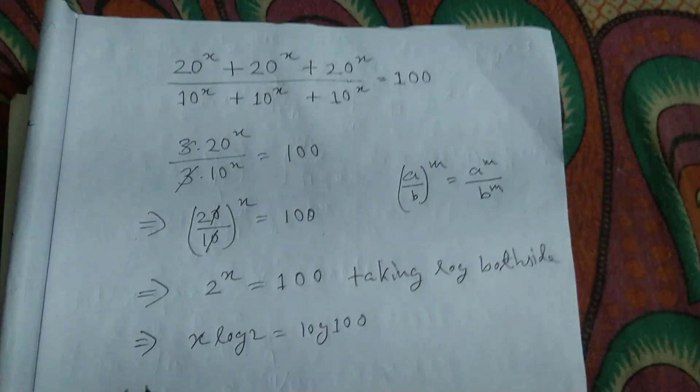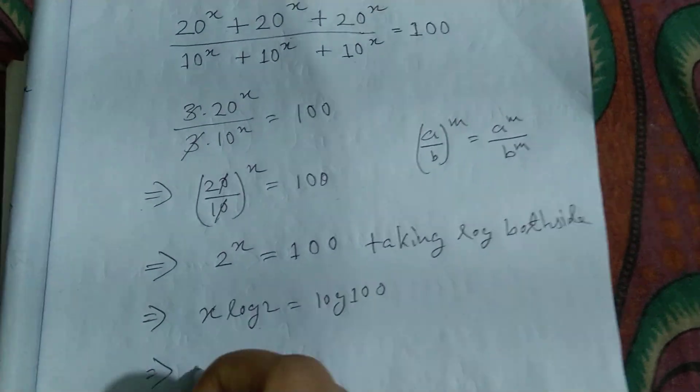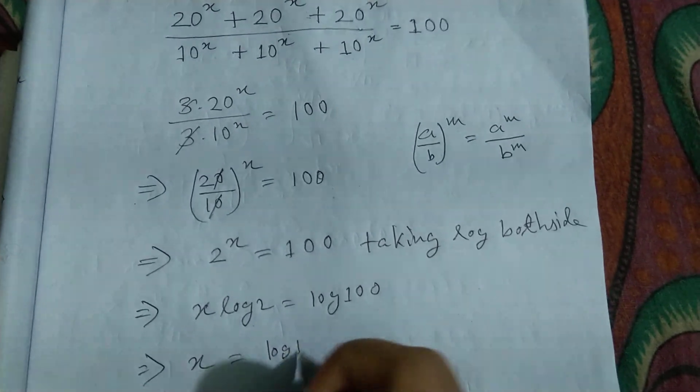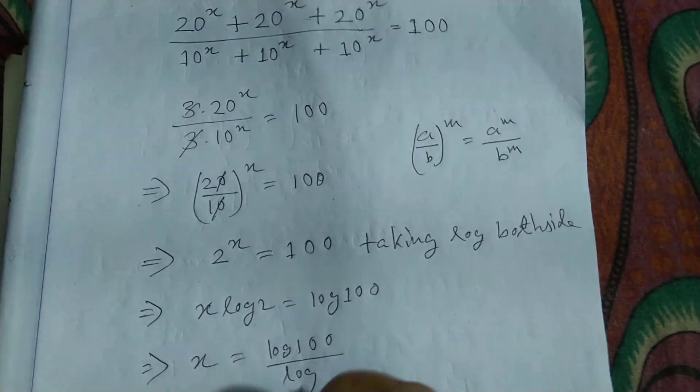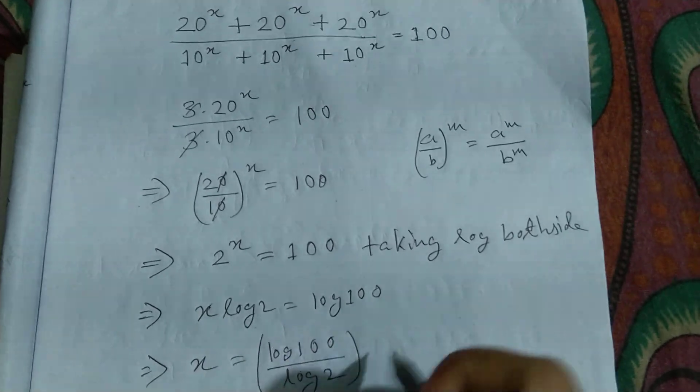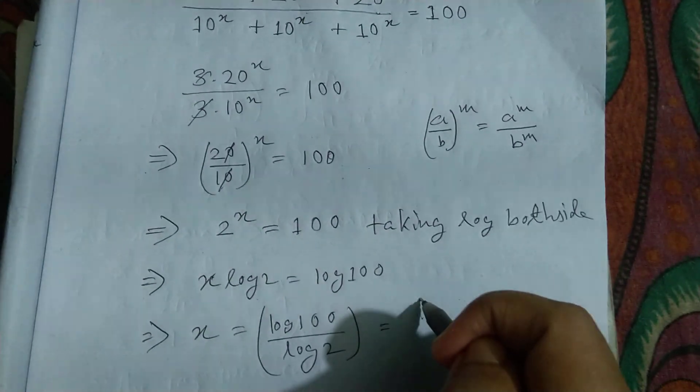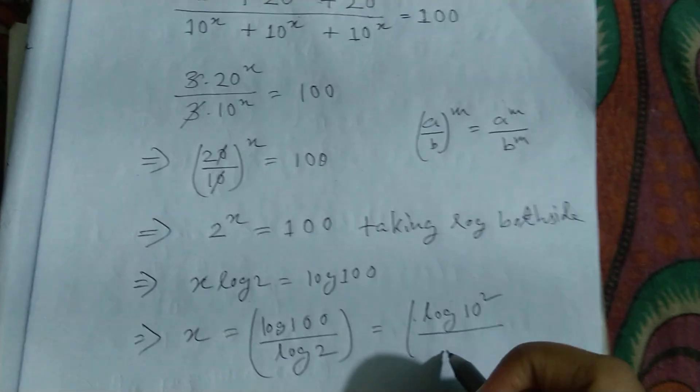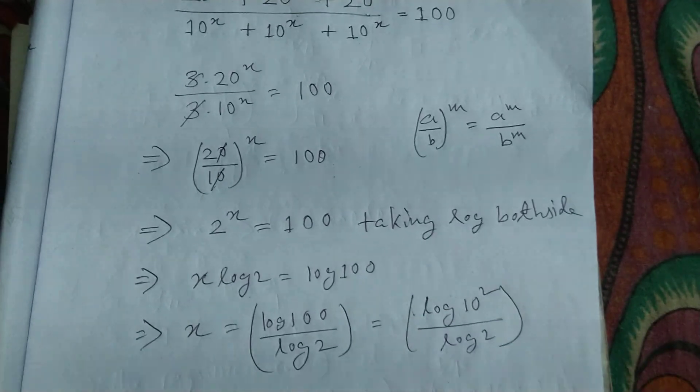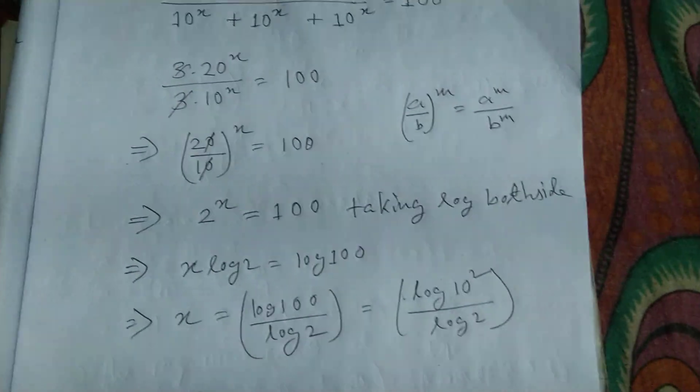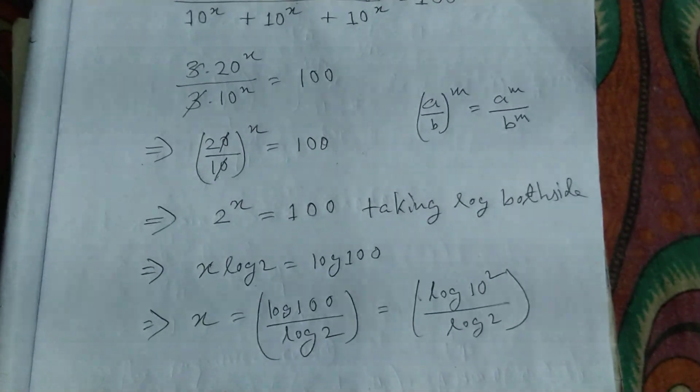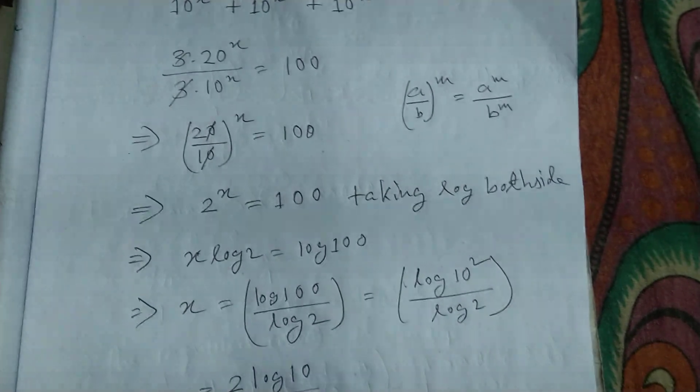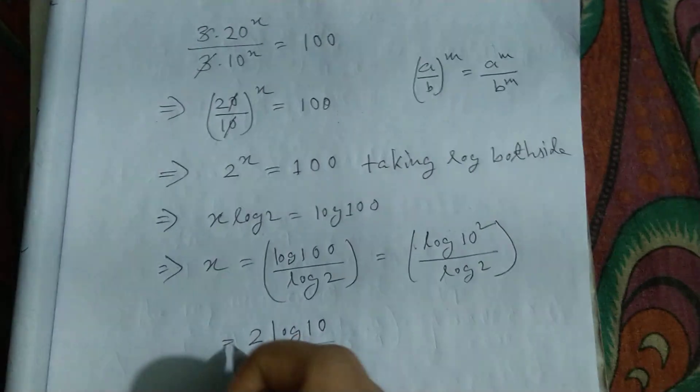x equals log 100 divided by log 2. Log 100 can be written as log 10^2 divided by log 2. So it can be written as 2 log 10 divided by log 2.